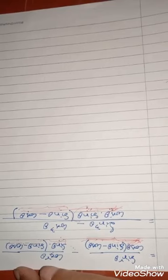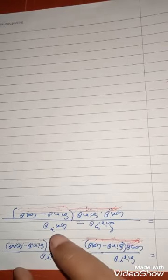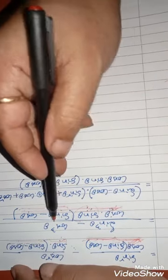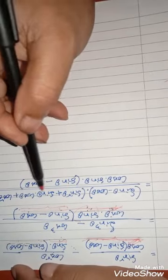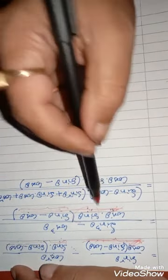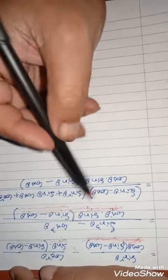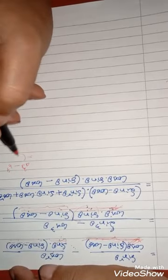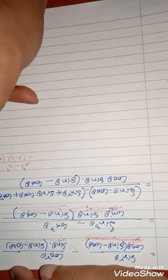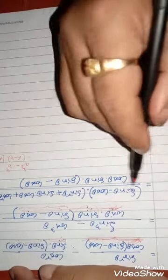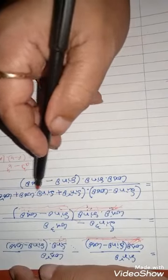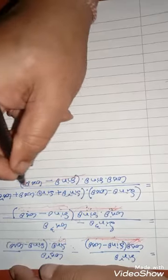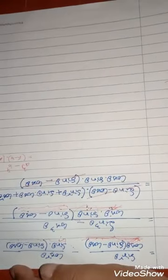So it is appearing like the algebraical identity A cube minus B cube. Now we can apply the A cube minus B cube formula here. That formula is A minus B into A squared plus AB plus B squared. So that way it is: A = sine minus cos, into sine squared plus sine·cos plus cos squared. And the denominator is the same. Now you see: this sine minus cos factor and this sine minus cos factor both can be cancelled out.